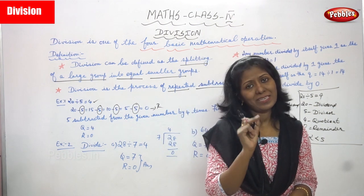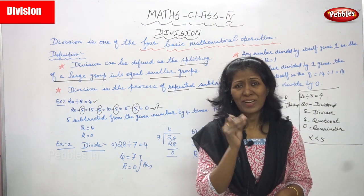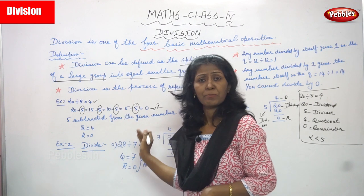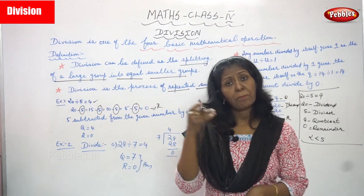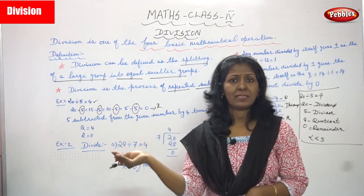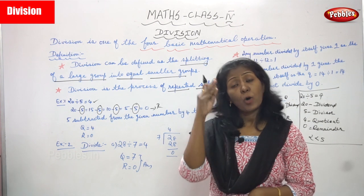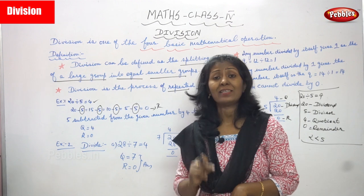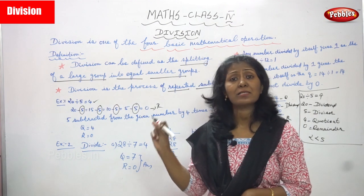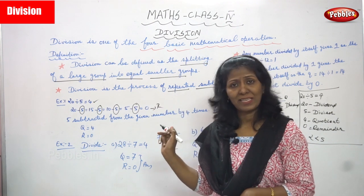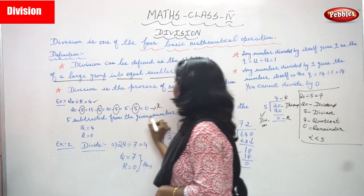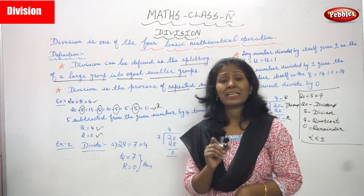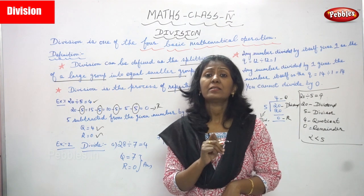You must circle only the 5s: 1, 2, 3, and 4. So how many times is 5 subtracted from 20? 4 times. So 5 is subtracted from the given number 20 by 4 times. The quotient is 4 and the remainder is 0. The given number 20 is the dividend, and we keep subtracting 5 from it.